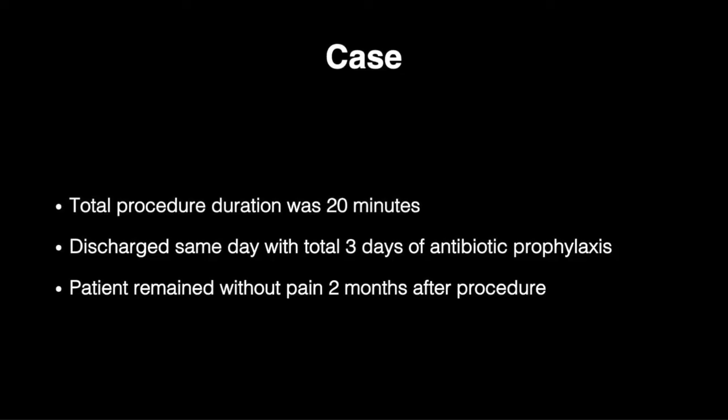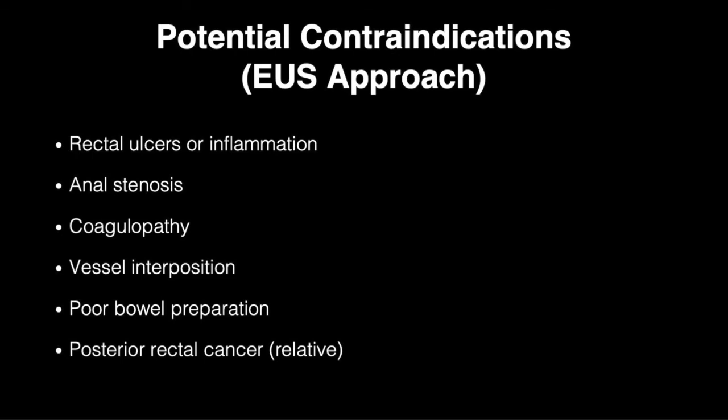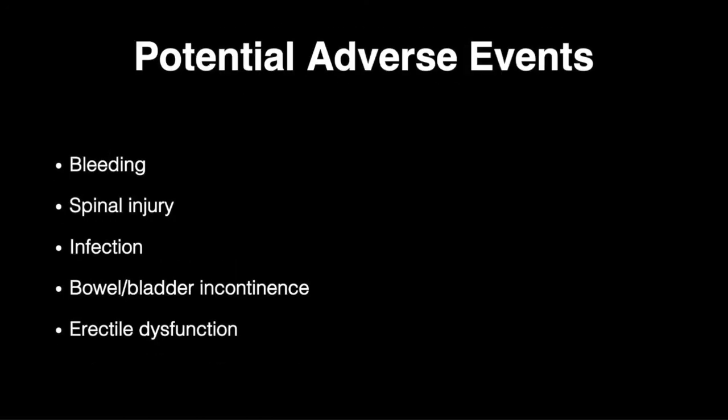The total procedure duration was 20 minutes and the patient was discharged the same day with a total of three days of antibiotic prophylaxis. The patient remains pain-free at two months following the procedure. Potential contraindications to performing a ganglion impar block using the lower EUS approach include rectal ulcers or inflammation, anal stenosis, coagulopathy, vessel interposition, or bowel preparation issues, and rectal cancer located in the posterior rectum overlying the ganglion.